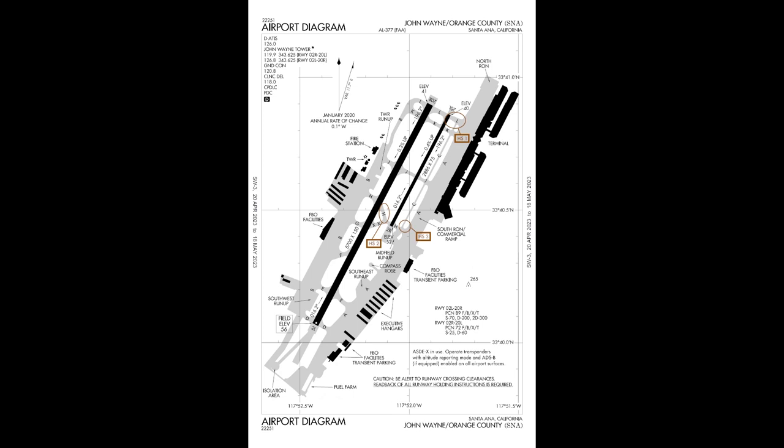Just before we hop in the cockpit, something else you should include in your approach planning is to have a look at an airport diagram. These are freely available for most countries through the Aeronautical Information Publication. In the US, you can get them directly from Skyvector as well as plenty of other sources. There are also Jeppesen charts available from Navigraph, but those are paid while the others are free.